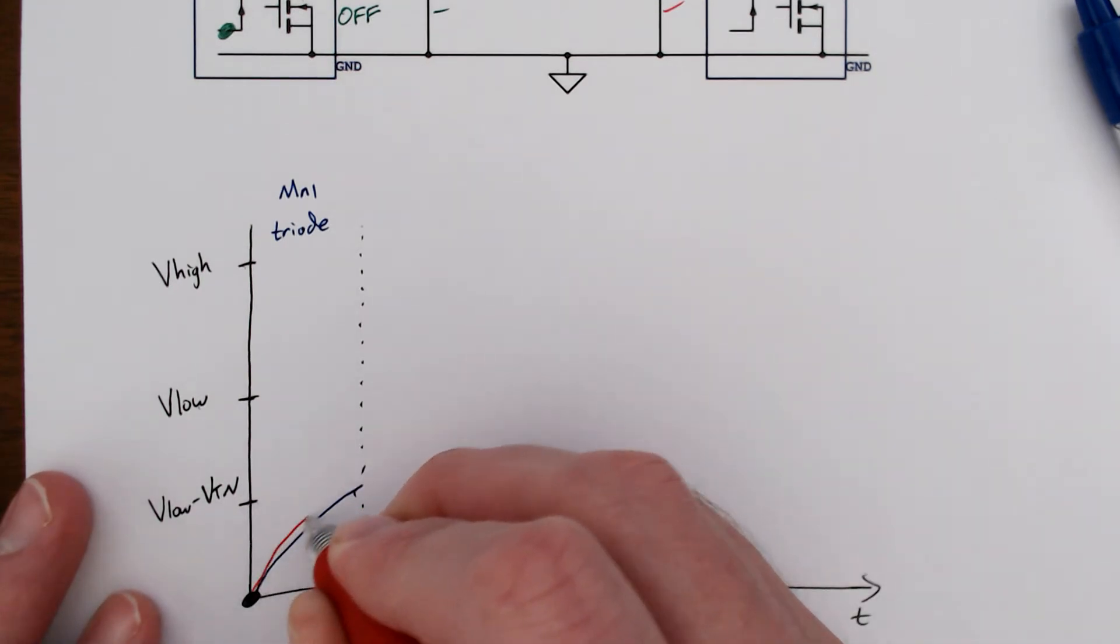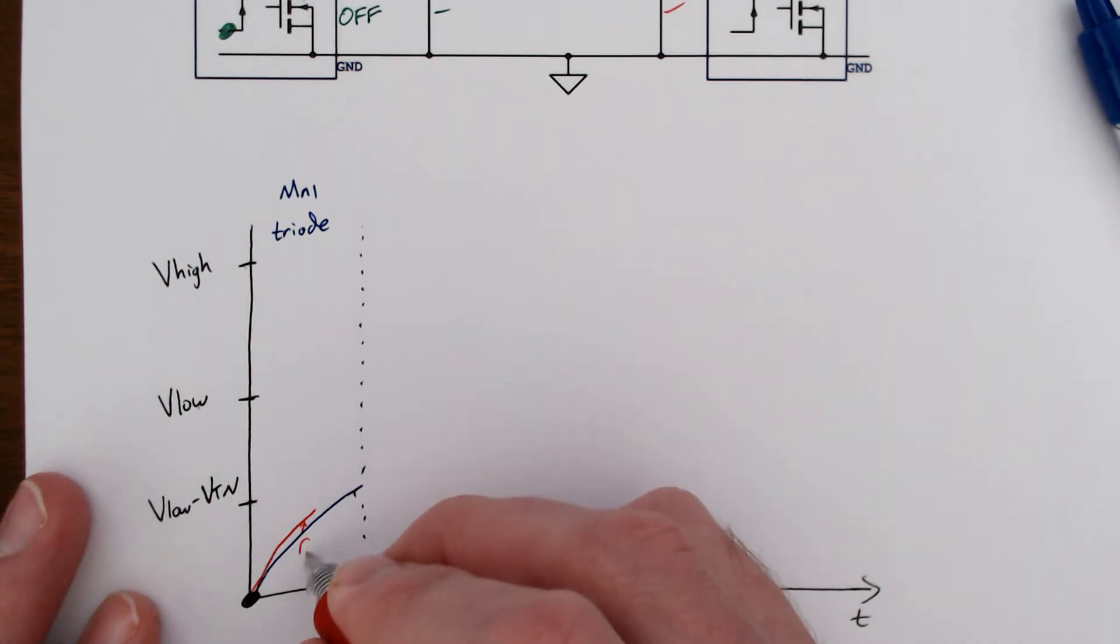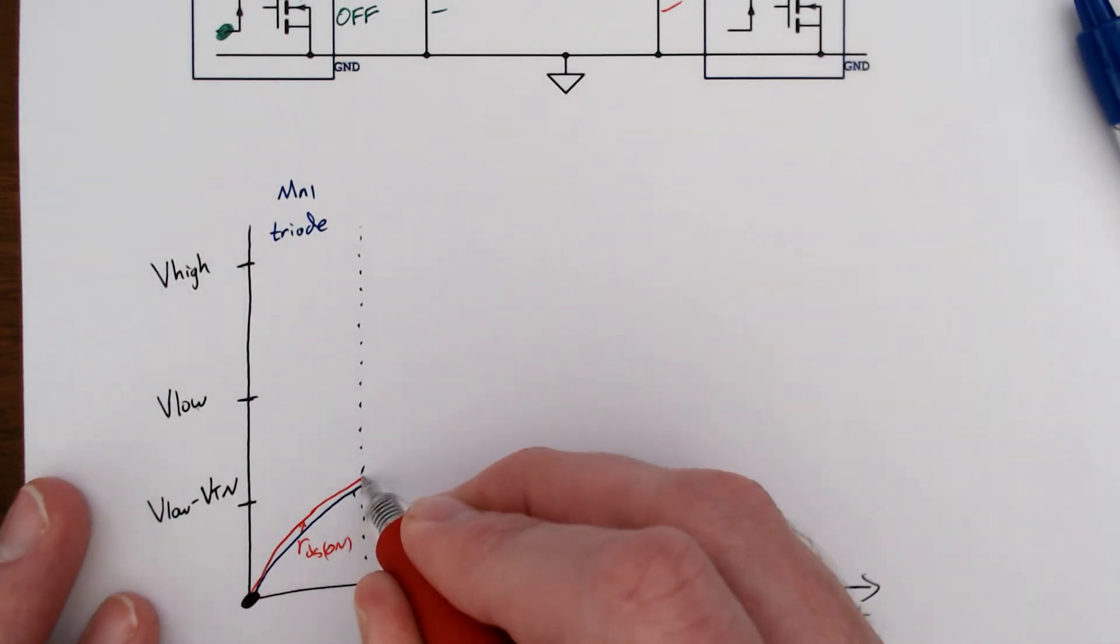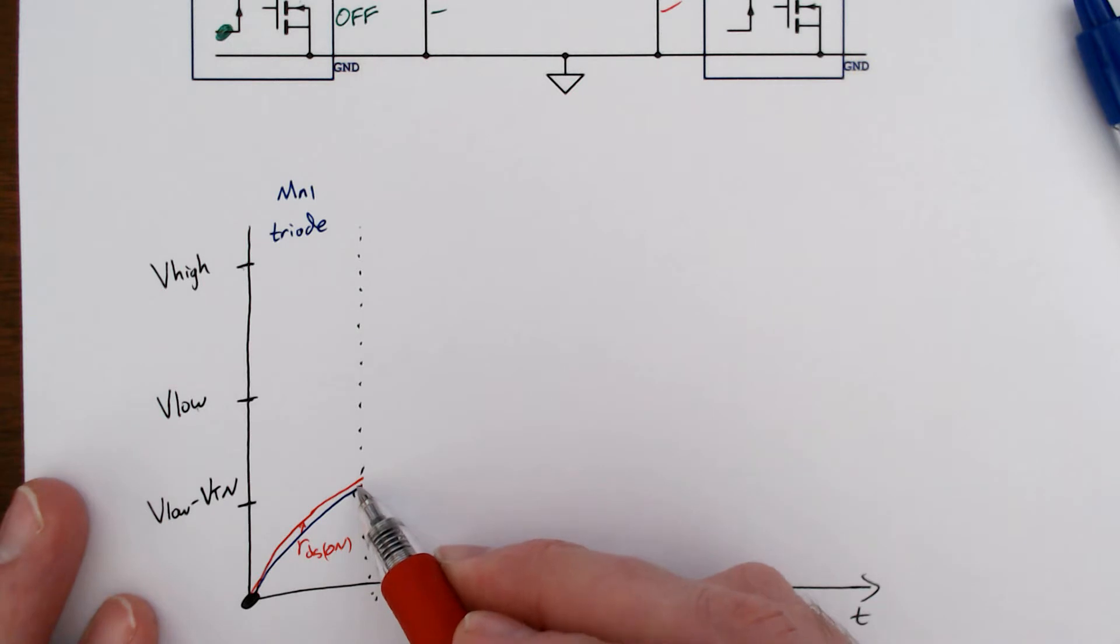We do have a little bit larger voltage across here. This is because this is RDS on, the on resistance of our MOSFET. And we hit here. Up until this point, we're in triode mode.